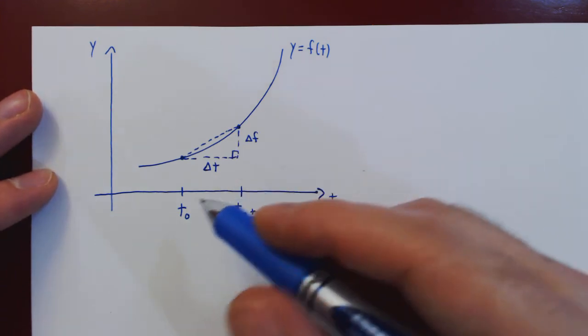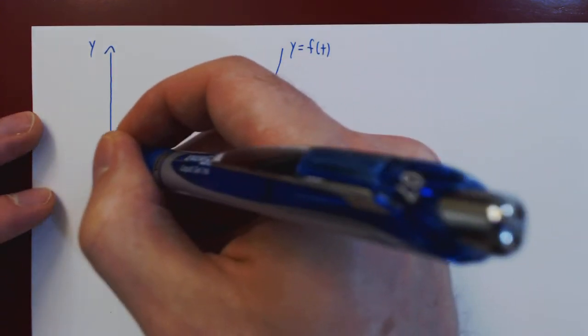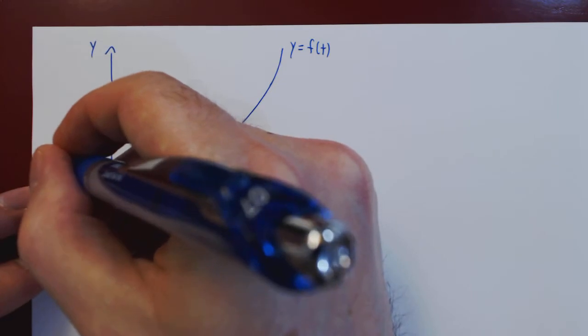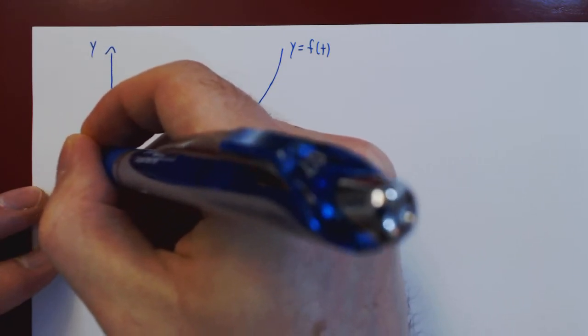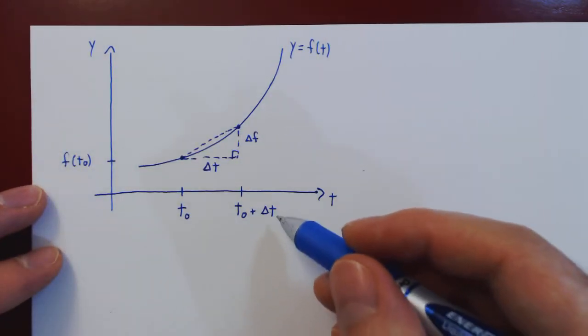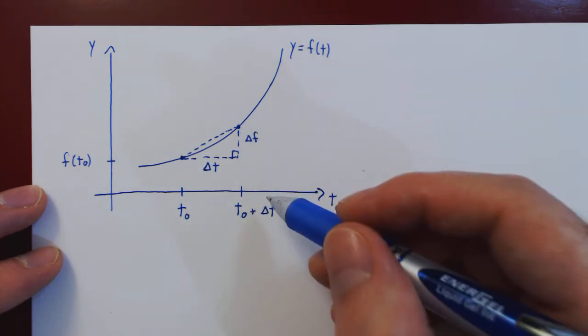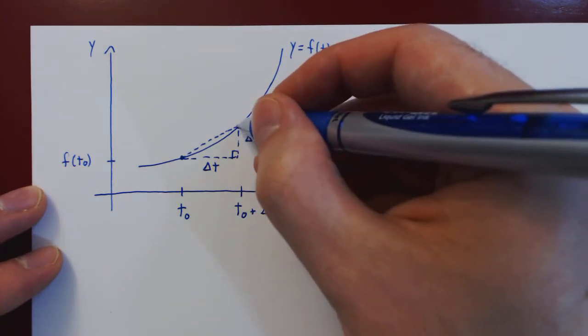At t0, the y-value is f of t0. At t0 plus delta t, the y-value, of course, is f of t0 plus delta t.